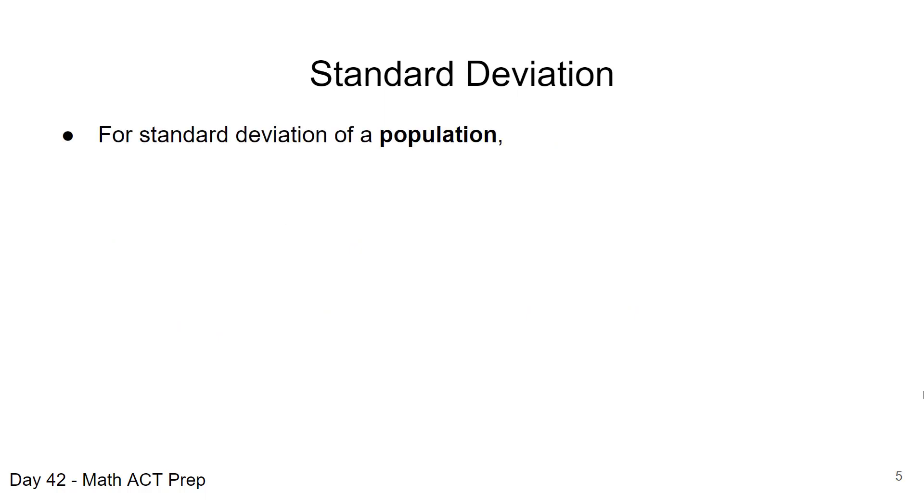So when we're talking about a population standard deviation, the entire population, we have a set of procedures. First of all, we need to find the mean. And then we will square the difference of the mean and each data point.